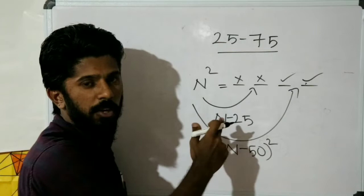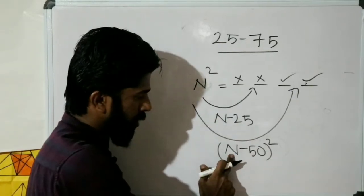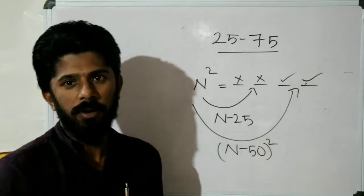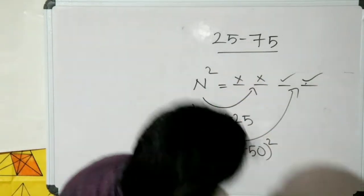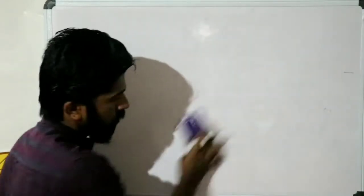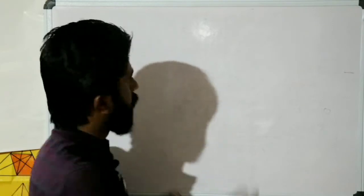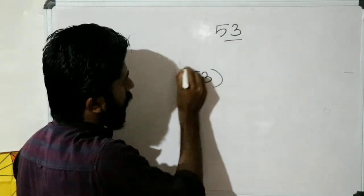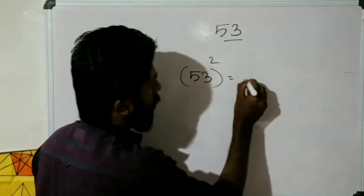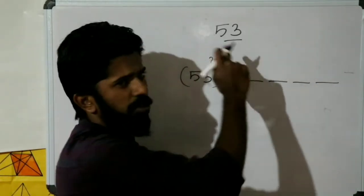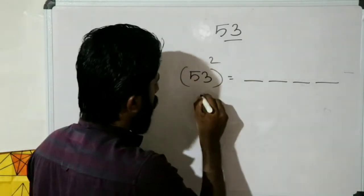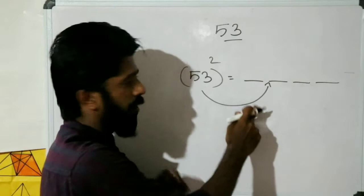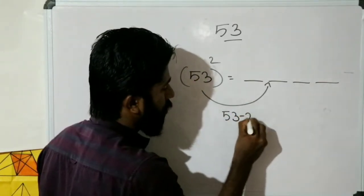For example, take the number 52. We do 52 minus 25, and then 52 minus 50, whole square. Now let's do another example with 53. We have 53 whole square. Using the method: N minus 25, so 53 minus 25.